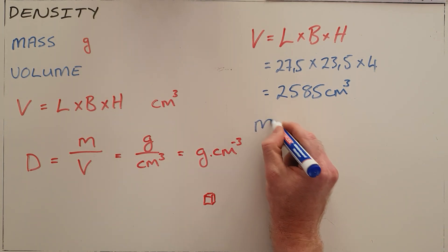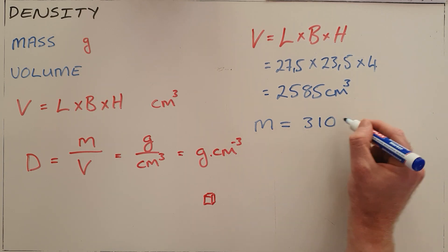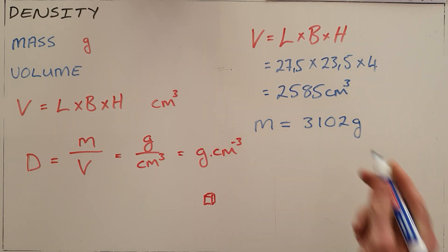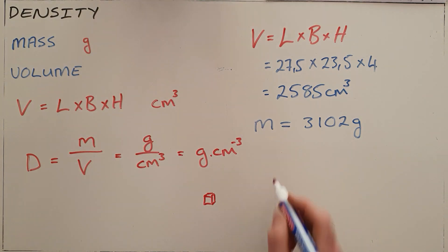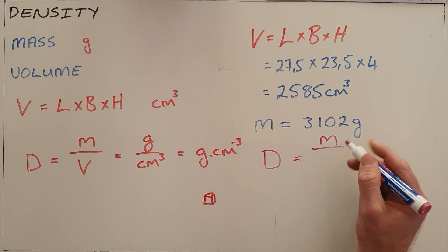I found that it had a mass of 3102 grams, or 3.102 kilograms. We can now calculate the density of this textbook by saying density is equal to the mass of this object divided by its volume.